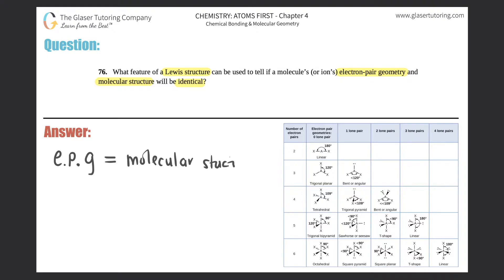This only exists when the central atom—so whatever your Lewis structure is—the central atom of that Lewis structure has zero lone pairs, and that means there's absolutely no dots on the central atom.